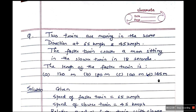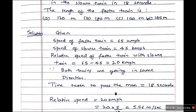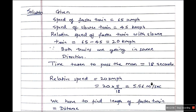First we'll solve it with the normal method, then I'll show the shortcut. The relative speed of the faster train with respect to the slower train is 65 minus 45, because they're moving in the same direction — so we subtract. Relative speed = 20 km per hour. Time taken to pass the man is 18 seconds. We convert the relative speed to meters per second: 20 × 5/18 = 5.56 meters per second.